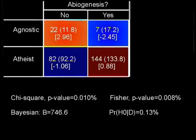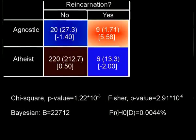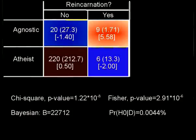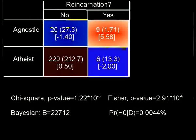It's not even the strongest — there is one that's even stronger: reincarnation. Almost one in three agnostics in this survey answered yes, and very few atheists answered the same. The frequentist p-values are really microscopic, and so is the probability of H0 given the data. The Bayes factor is 22,712, which is the probability of the data under H1 dependence divided by the probability of the data given H0 independence. Very clear evidence. Okay, that's enough divisiveness for one day. I hope you enjoyed it. Cheers!